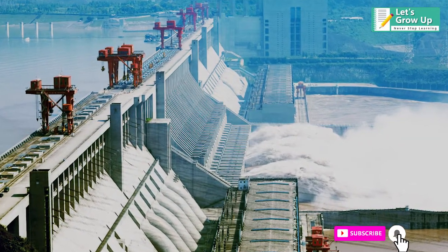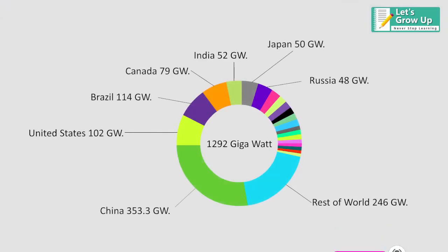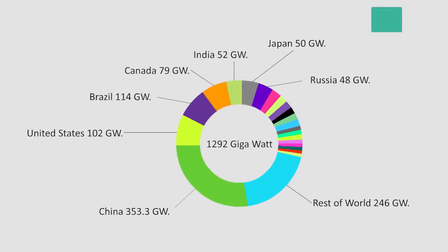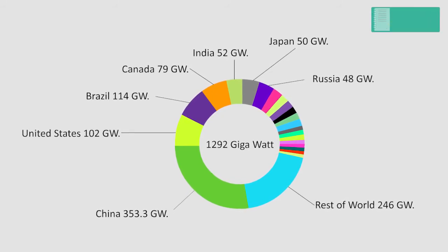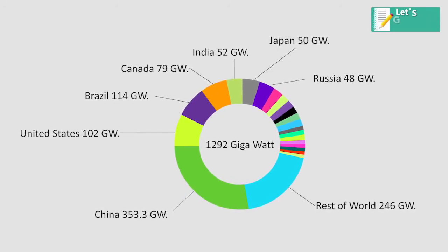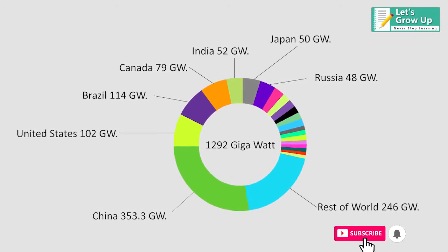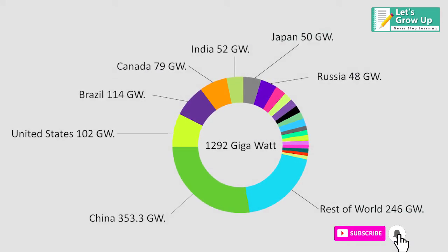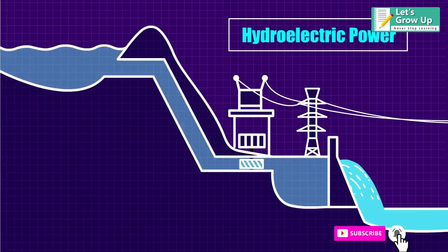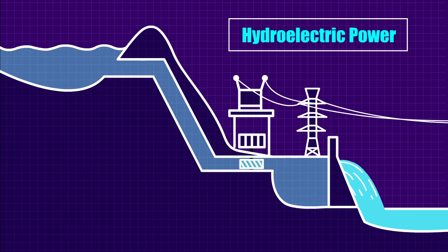Currently, the total installed capacity globally is 1,292 gigawatts, with China having the highest capacity at 353.3 gigawatts, followed by Brazil at 114 gigawatts. To learn more about hydroelectricity and how it works, check out our next video.